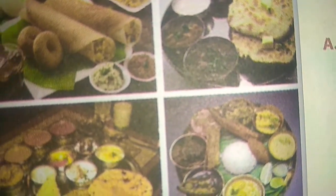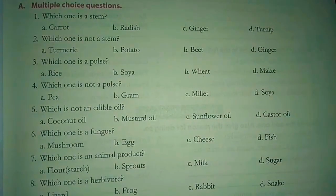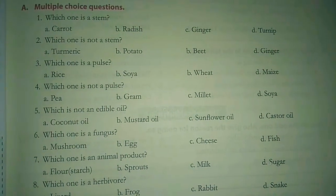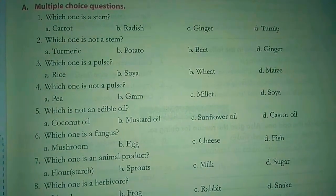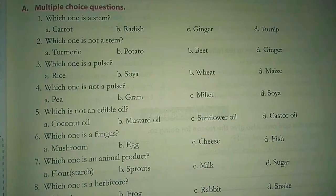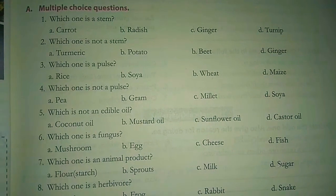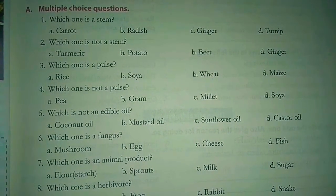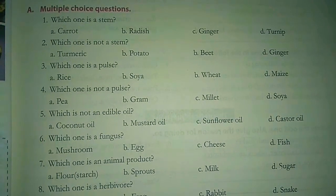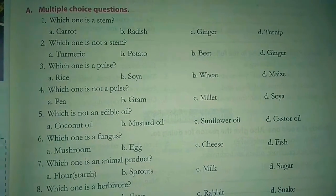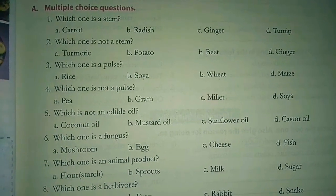Now let's see some questions for homework. Question number one: which one is a stem? Options are A. Carrot, B. Radish, C. Ginger, D. Turnip. You have to choose the correct option. Question number two: which one is not a stem? Options are turmeric, potato, beet, and ginger.